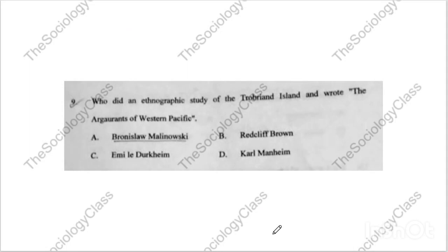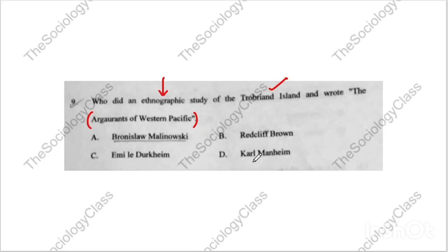Question number nine: 'Who did an ethnographic study of the Trobriand Islands and wrote Argonauts of the Western Pacific?' Note the keyword: ethnographic study. Questions can also ask which type of study 'Argonauts of the Western Pacific' is — it is an ethnographic study. The options are Malinowski, Radcliffe-Brown, Emile Durkheim, Karl Mannheim. The correct answer is A — Malinowski. Remember books by Malinowski and Radcliffe-Brown.